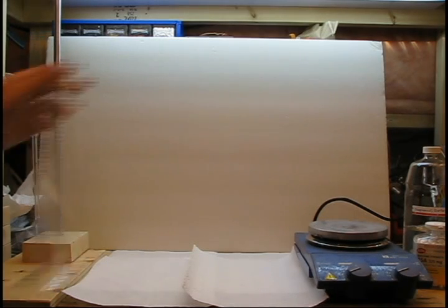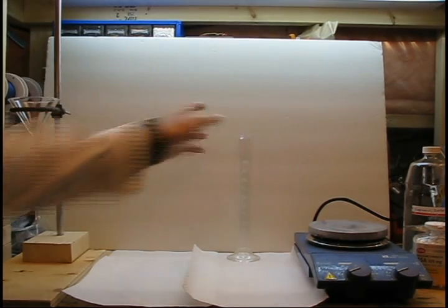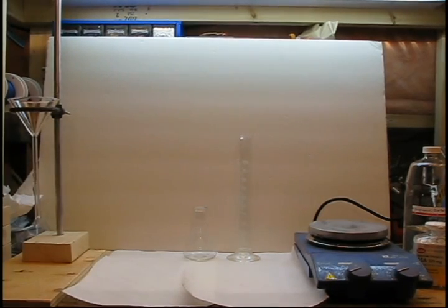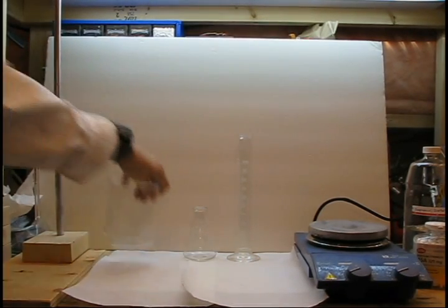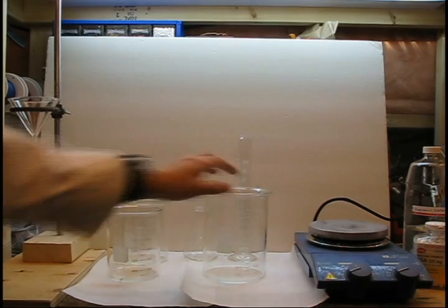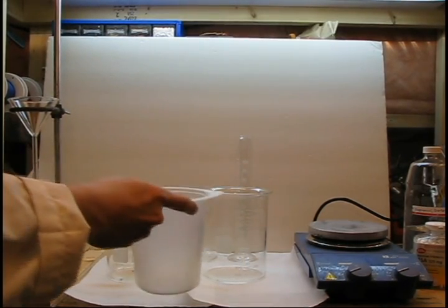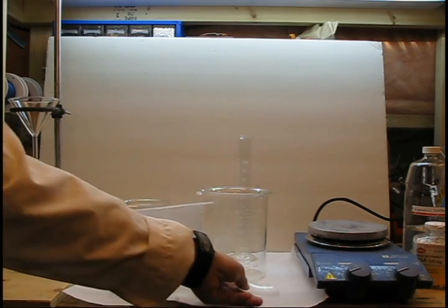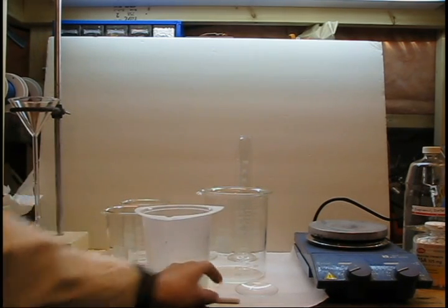For this procedure you will need a 100 milliliter graduated cylinder, a 125 milliliter Erlenmeyer flask, two 600 milliliter beakers, a 1 liter beaker or large container for an ice bath, another container for cooling distilled water, a glass stir rod, a watch glass, a Teflon stir bar, and either a filter funnel with ring clamp or a vacuum filtration flask and Buchner funnel.